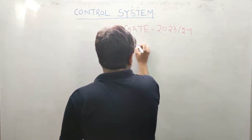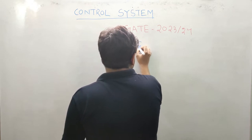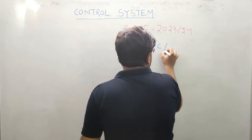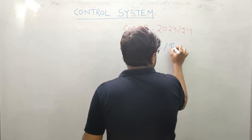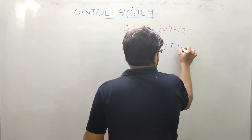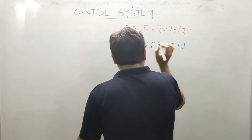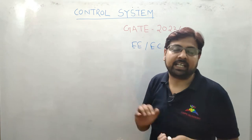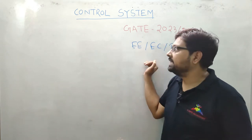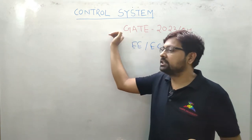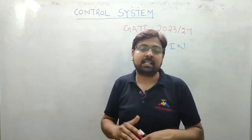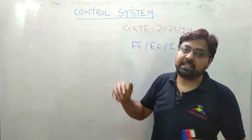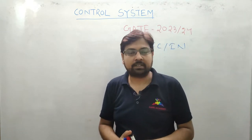Control System एक common subject है for EE, EC & Instrumentation. अगर आप EE, EC & Instrumentation तीनों branch में हैं, तो आपके लिए Control System एक common paper है. तो तीनों branch के लिए एक common paper है मेरा Control System.